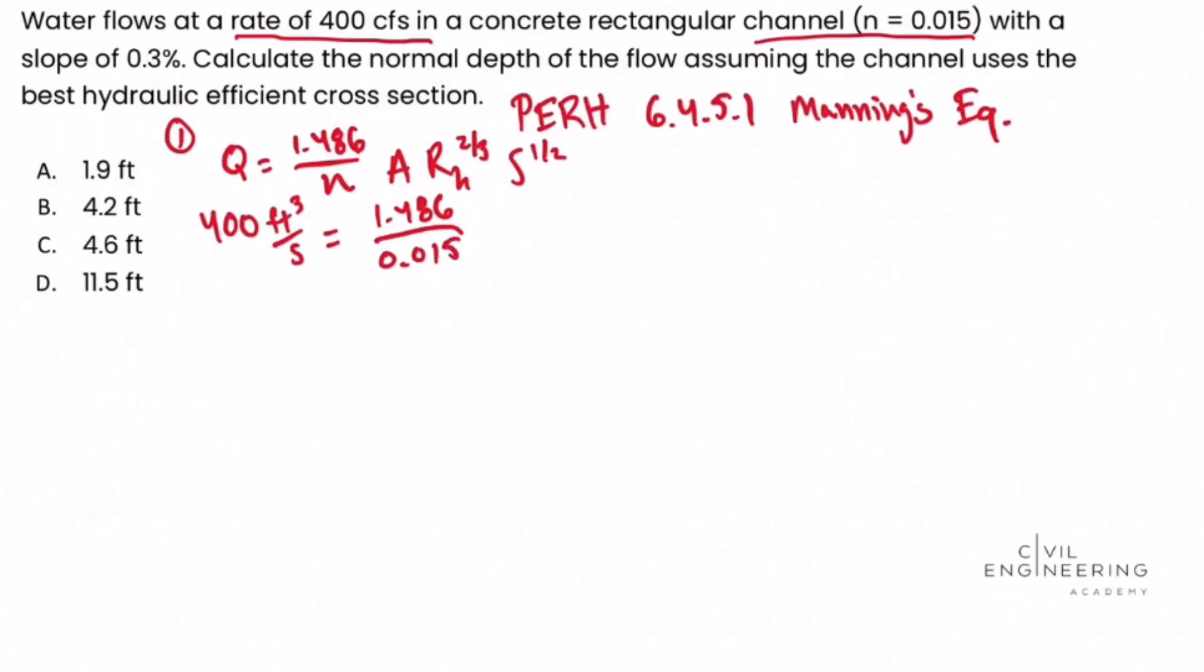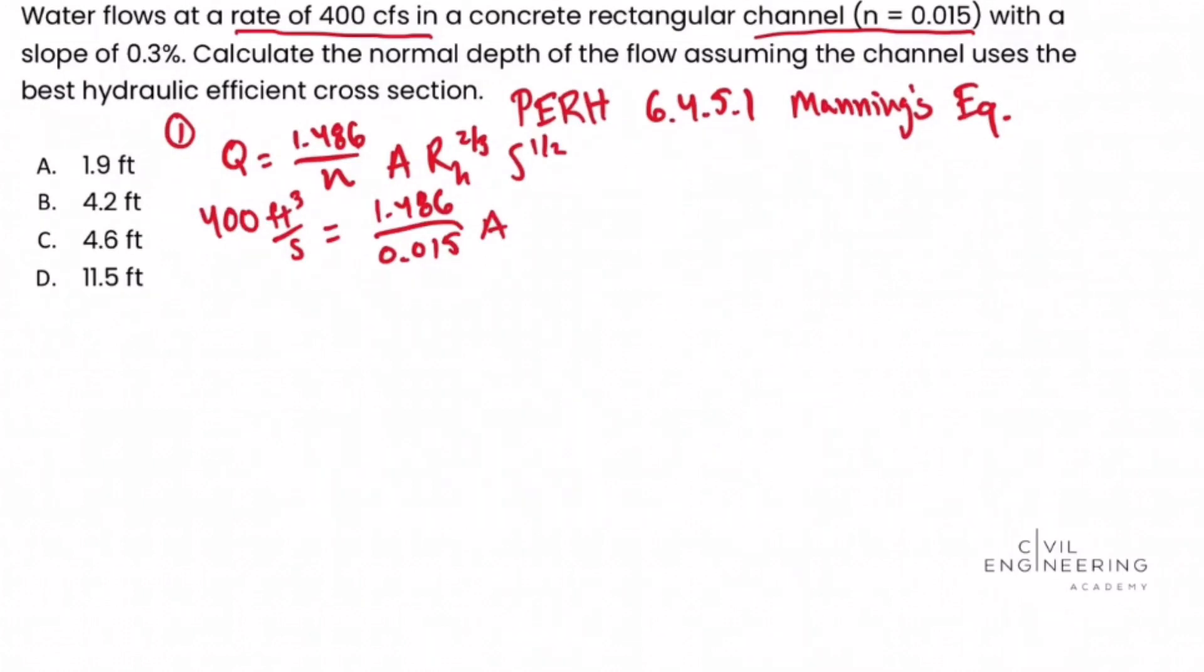And then area, well we don't have an area, so for now we'll just leave that variable blank. Hydraulic radius, we don't have that either, so we'll just write that in as a placeholder for now. Slope S, well we're given that in the problem of 0.3%. So we'll change that to 0.003, decimal form versus percent. And that quantity is raised to 1 half.